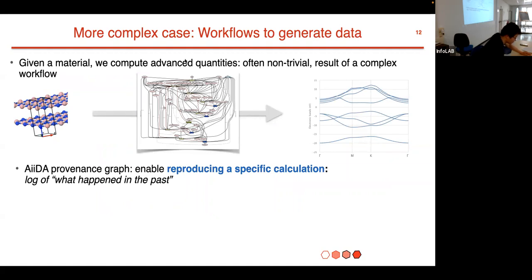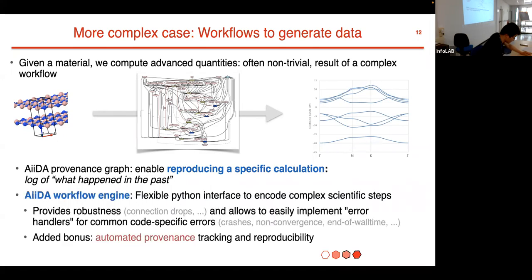For a more complex case, for example, we want to calculate the band structure. We start from this crystal structure and launch an AiiDA workflow. It will automatically generate this provenance graph and then we get a final band structure. This AiiDA automatically generated provenance graph enables us to reproduce a specific calculation. It's like a log of what happened in the past. The AiiDA workflow engine is a flexible Python interface to encode our complex scientific steps like the WorkChain class. Moreover, the workflow engine provides robustness against SSH connection drops and allows to easily implement error handlers for common errors like end of wall time. It has this additional bonus that it can automatically track the provenance to ensure full reproducibility.